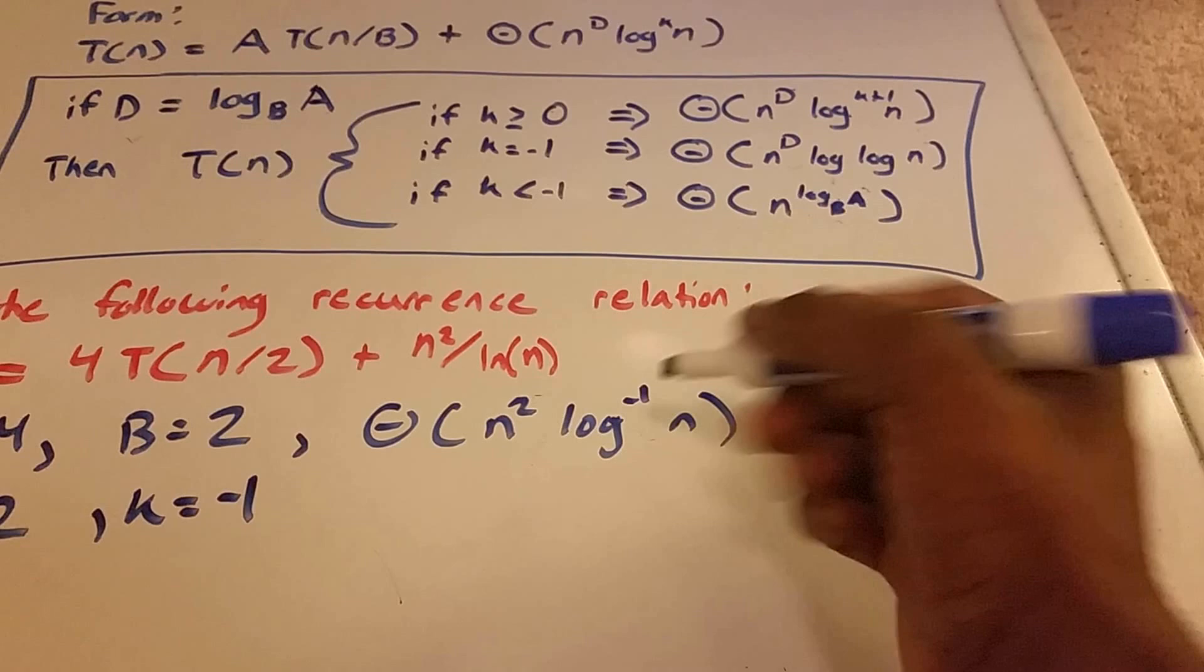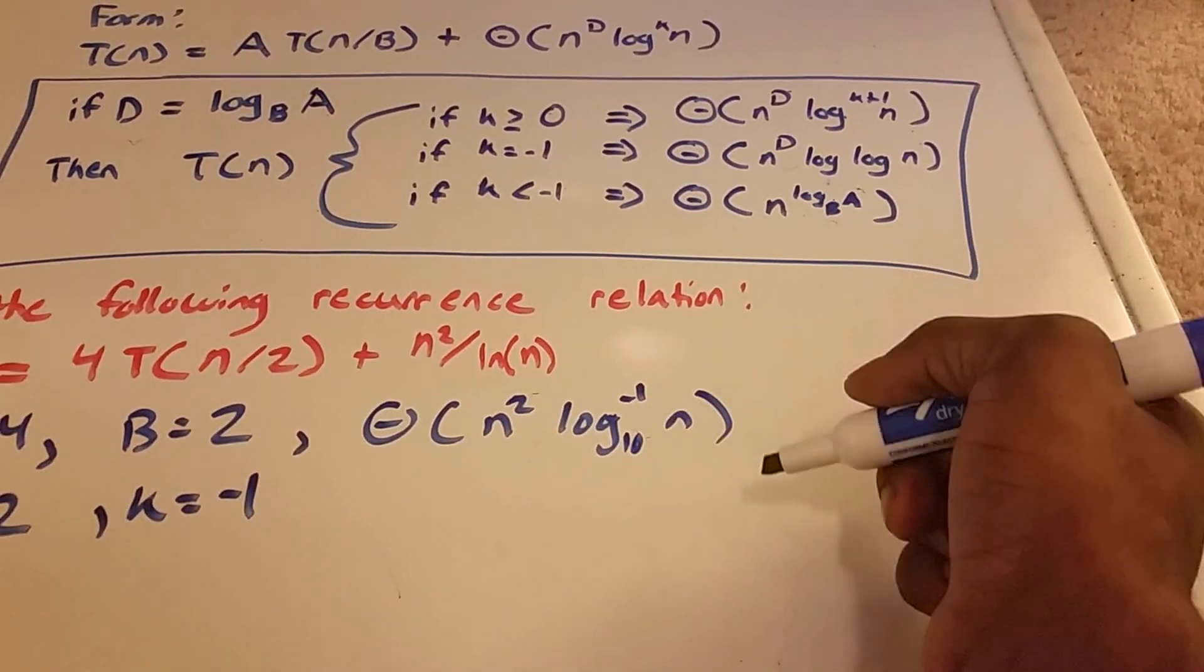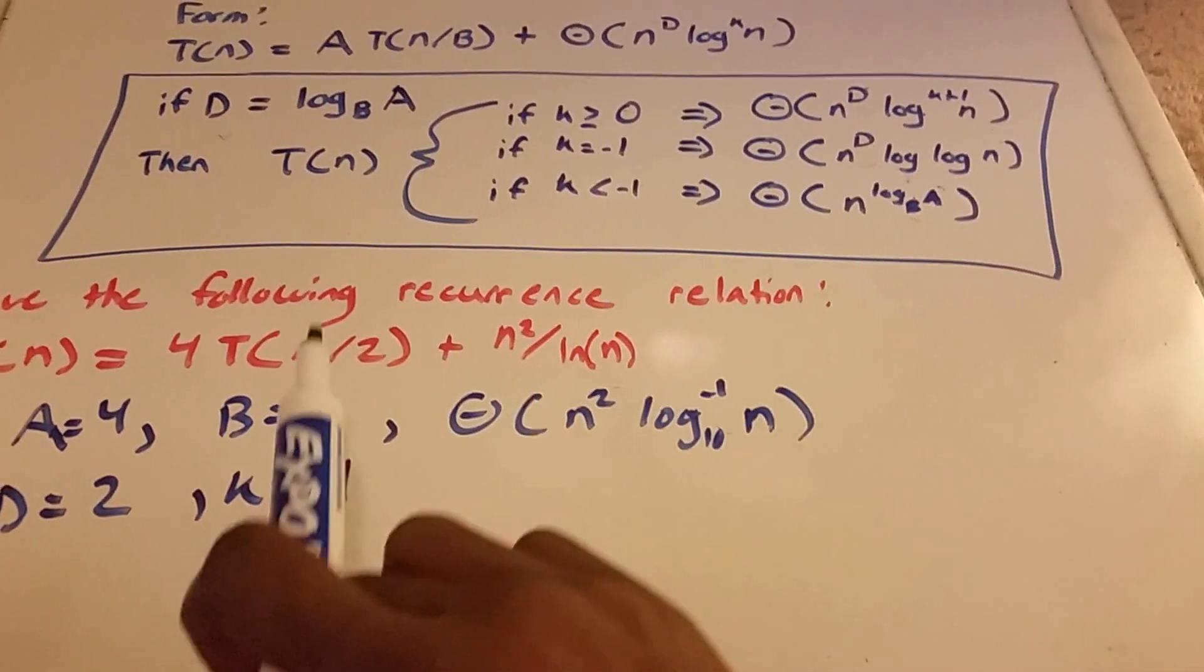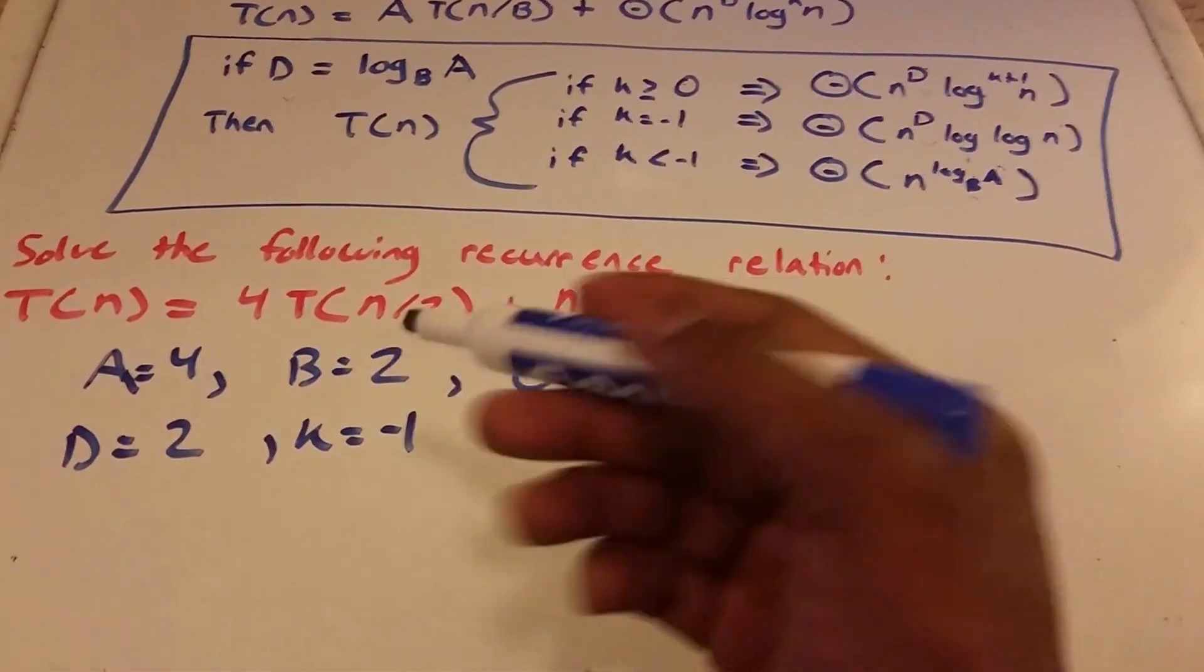So k equals negative 1. And this is a natural log, so we can put base 10 there. And that will allow us to solve this.